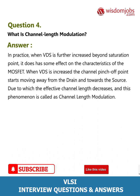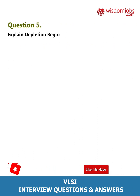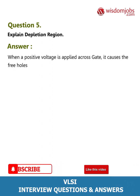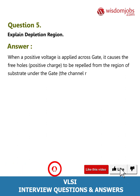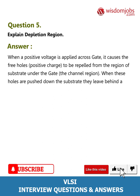Question 5: Explain depletion region. Answer: When a positive voltage is applied across the gate, it causes the free holes (positive charge) to be repelled from the region of the substrate under the gate — the channel region. When these holes are pushed down into the substrate, they leave behind a carrier depletion region.